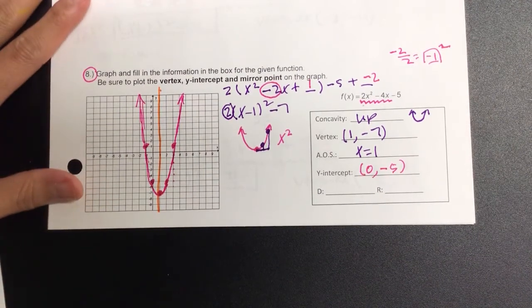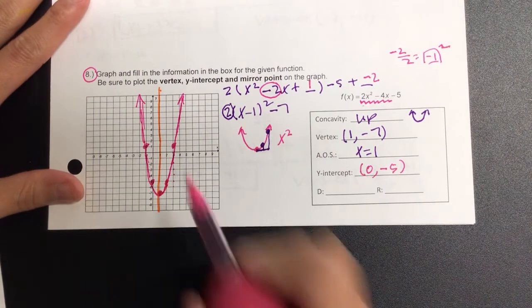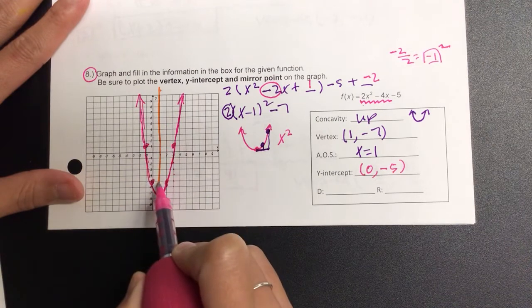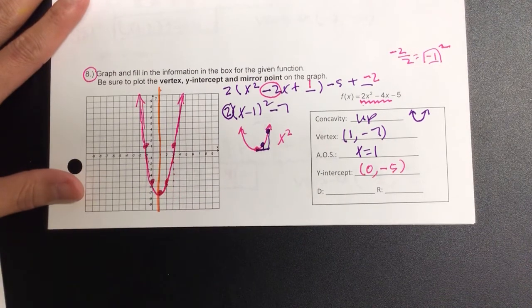Question? What's the mirror point? The mirror point, as in the axis of symmetry. So to the right two, left two. From that axis of symmetry, right one, left one. Okay?